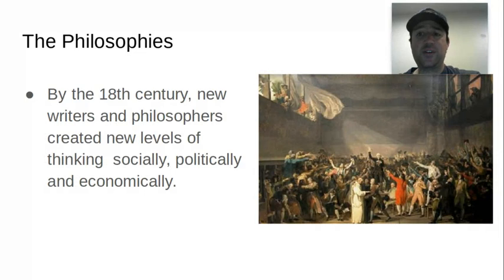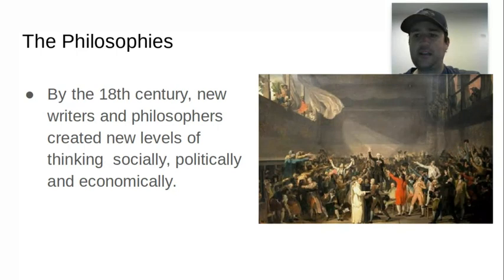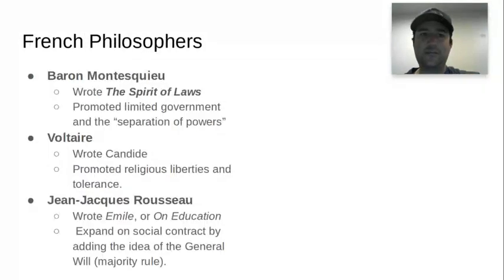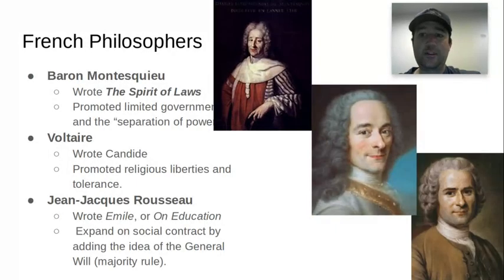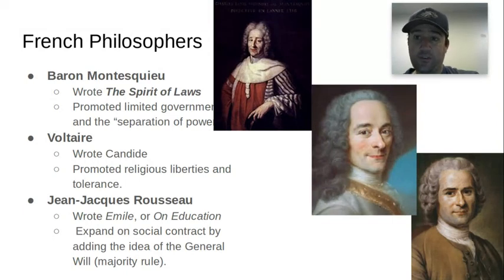As time goes on, especially during the 18th century, there are going to be more philosophers who take these ideas, expand on them, and think critically about how we are socially, politically, and economically organized. We're going to focus on a few important ones — some of the French philosophers: Montesquieu, Voltaire, and Rousseau.